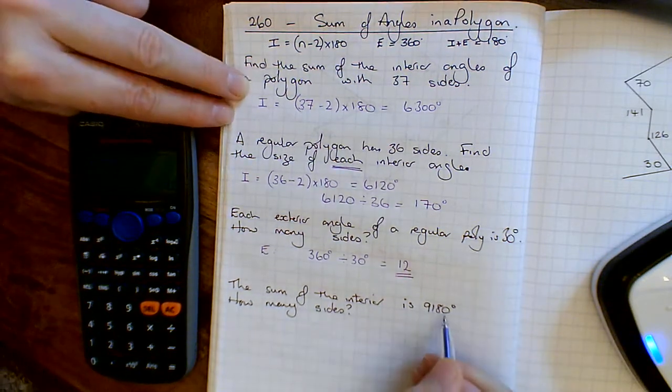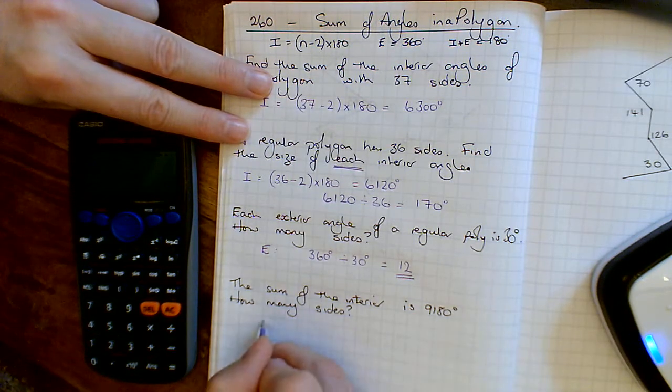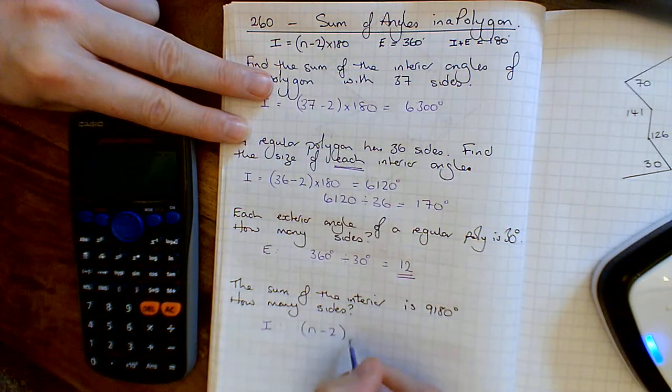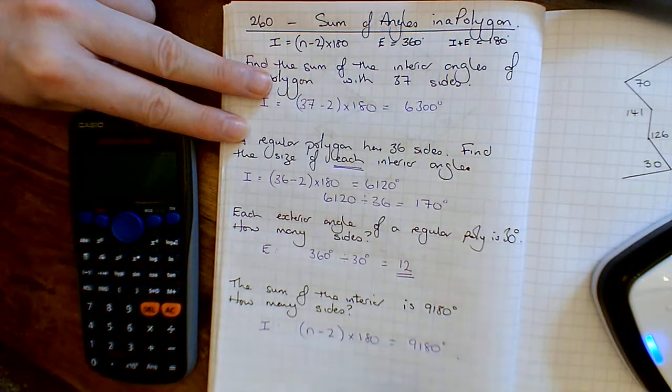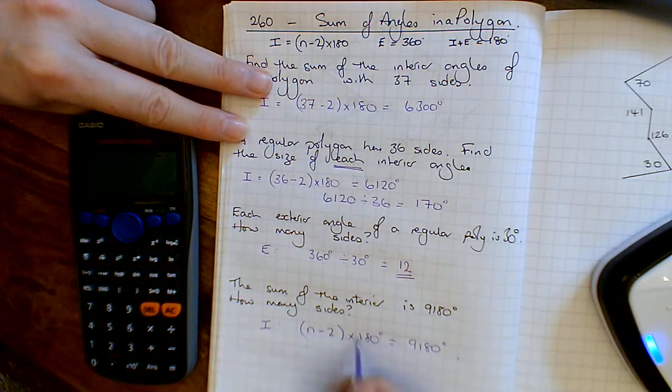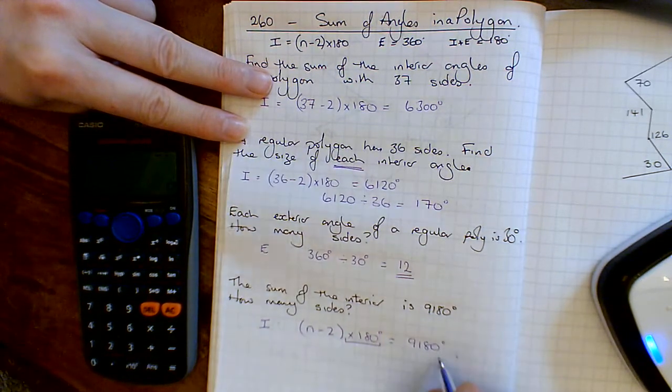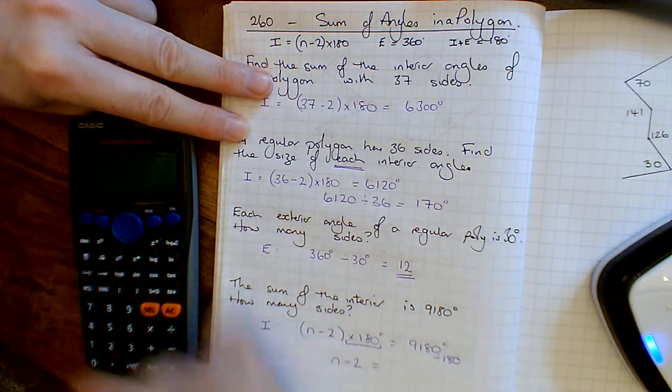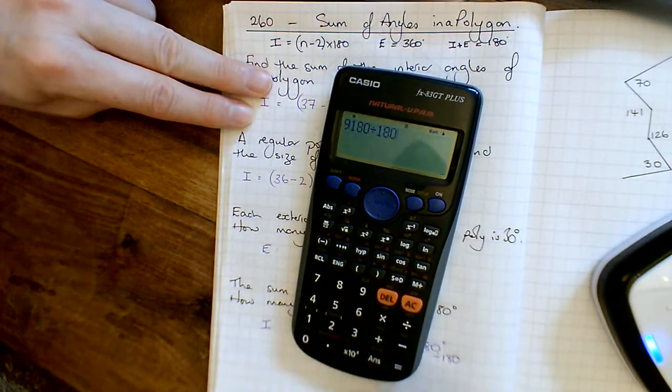The sum of the interior angles is 9180, how many sides does it have? This is a regular polygon. So we've got the number of sides take away 2, times by 180 equals 9180 degrees. So what do I need to times by 180 to get 9180? All I'll do is divide by 180, so the number of sides take away 2 must be 9180 divided by 180, which is 51.